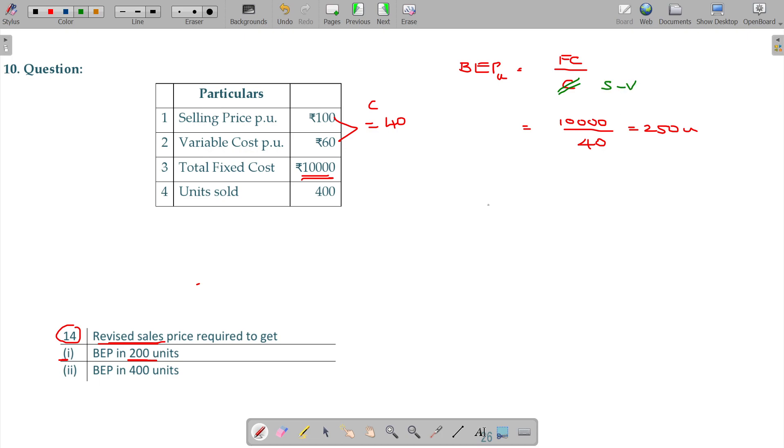BEP in units being 200 units, fixed cost is 10,000 rupees. We need to find the revised sales price S. The variable cost is 60. So 200 = 10,000 / (S - 60). If you solve this equation, you can find the value for S which is the revised sale price. At that sale price, you can attain BEP at 200 units.